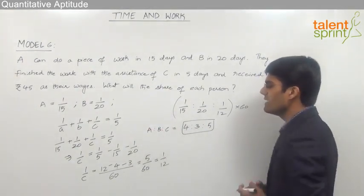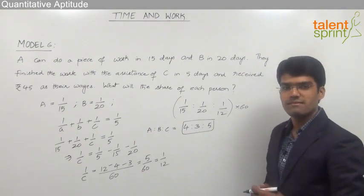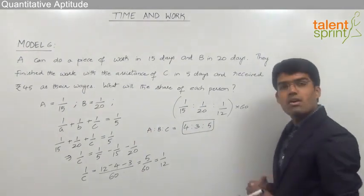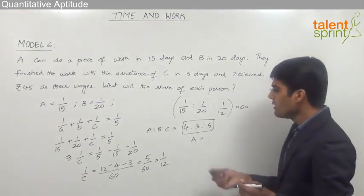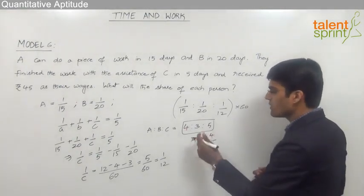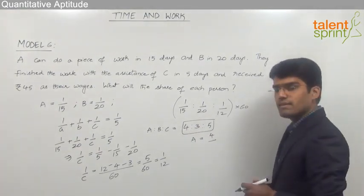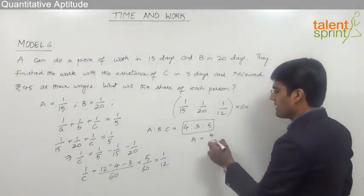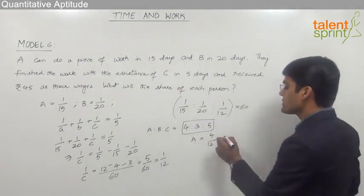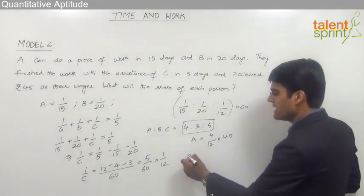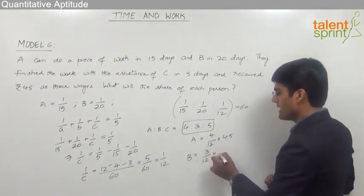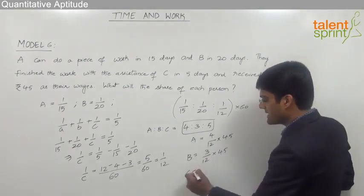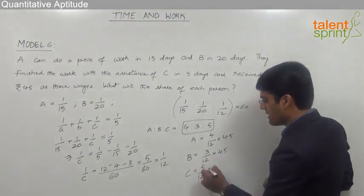So A, B, and C will get the shares in the ratio 4:3:5. So now using the concept of ratios, we can say that the amount that A gets will be 4 parts out of total 4 + 3 + 5 = 12 multiplied by the total amount which is 45. Similarly, B gets 3/12 × 45 and C gets 5/12 × 45.